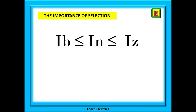We are sometimes asked why it is important to make the correct choices. Well there are two basic reasons. The circuit breaker must be the right size to carry the load but not so big that it never trips, and the cable must be able to carry safely any overload current until the breaker operates. This principle is shown in the equation on this page.